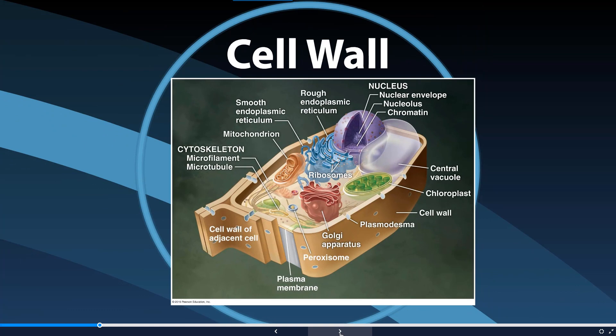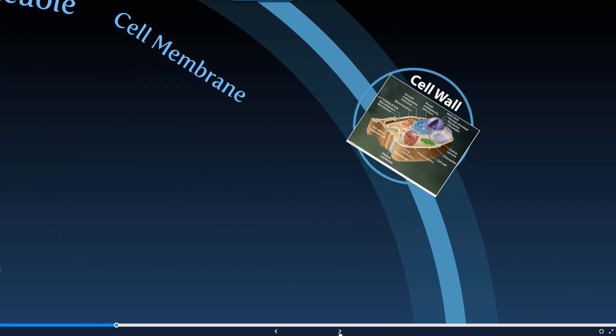With the cell wall, we find this in eukaryotic cells as well as prokaryotic cells. However, we only find it in some eukaryotic organisms, such as plant cells. This here is an example of a plant cell. It's important to note that the cell wall is found on the exterior of the cell membrane — it doesn't replace the cell membrane, it's in addition to it in some cells.